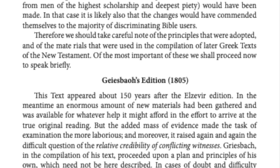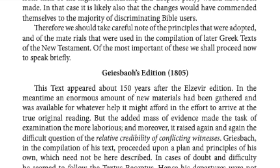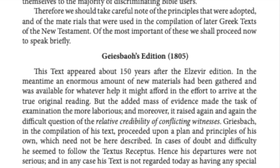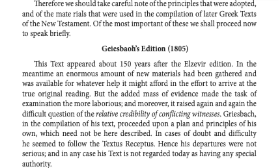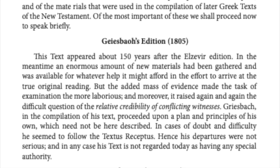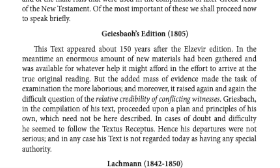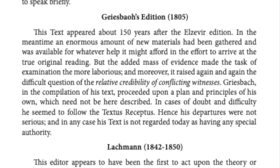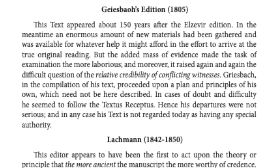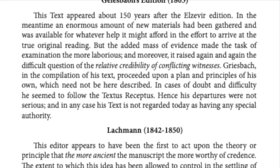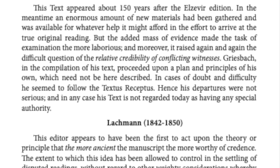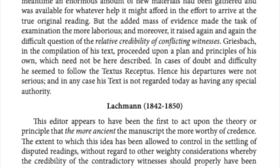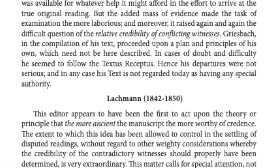Griesbach's Edition, 1805. This text appeared about 150 years after the Elzevir edition. In the meantime, an enormous amount of new material had been gathered and was available for whatever help it might afford in the effort to arrive at a true original reading. But the added mass of evidence made the task of examination more laborious, and moreover it raised again and again the difficult question of the relative credibility of conflicting witnesses. Griesbach, in the compilation of his text, proceeded upon a plan and principles of his own. In cases of doubt and difficulty, he seemed to follow the Textus Receptus. Hence his departures were not serious, and in any case his text is not regarded today as having any special authority.